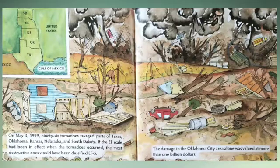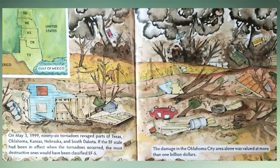On May 3, 1999, 96 tornadoes ravaged parts of Texas, Oklahoma, Kansas, Nebraska, and South Dakota. If the EF scale had been in effect when the tornadoes occurred, the most destructive ones would have been classified EF5. The damage in the Oklahoma City area alone was valued at more than $1 billion.